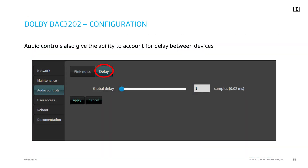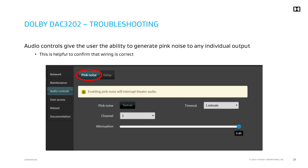Audio controls provide the ability to account for delay between devices with the control presented here. Audio controls also provide the user with the ability to generate pink noise to any individual output, which may be helpful in order to confirm that the speaker wiring is correct at this stage within the signal path. Once the DAC-3202 is installed and configured, it is time to move on to the next stage in the installation process.